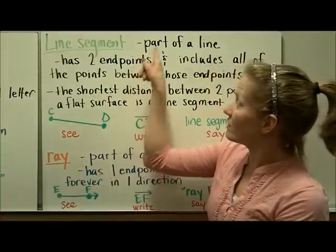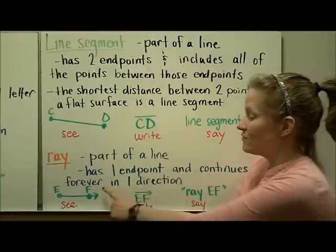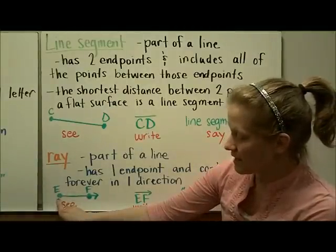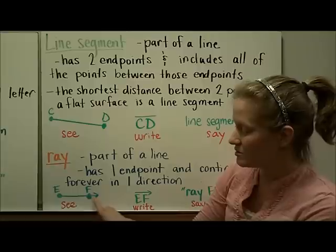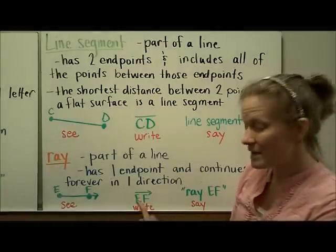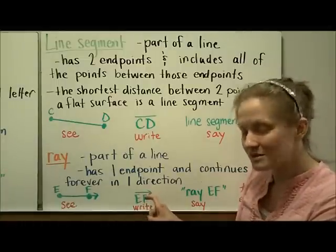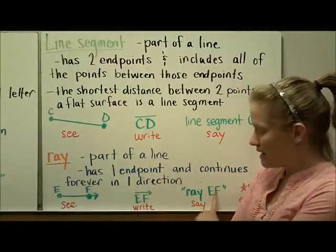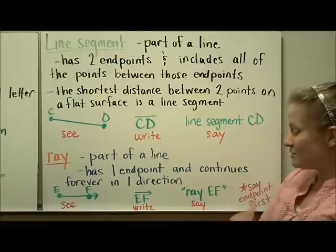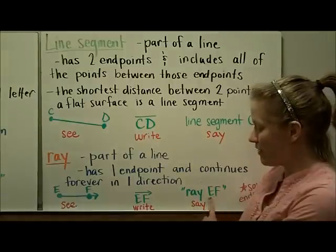A ray is also part of a line, just like a line segment, but it's different because it has one endpoint and then continues forever or infinitely in one direction. Ray EF has an endpoint and then continues, as shown by the arrow pointing in one direction. We name it by writing EF with the ray sign, which looks like a line segment with an arrow on one side, and we read it as ray EF. It's very important that whenever you name or write a ray, you say the endpoint first — E is first because it's the endpoint.